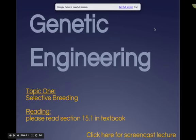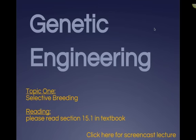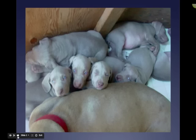Welcome ladies and gentlemen. This is a screencast for genetic engineering notes for Ms. Steyer's CP biology class. We're going to start today — this is video one of four on selective breeding. The pre-reading you need for this section is section 15.1 in the Pearson textbook, so make sure you have that read beforehand. You can click down here for the screencast; it's located in the Google slide production. So let's get going for today.